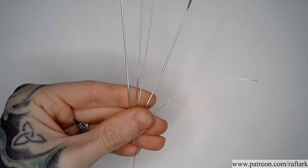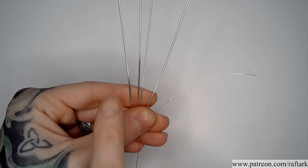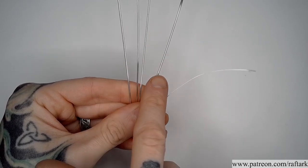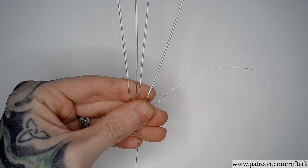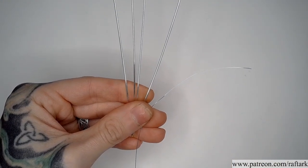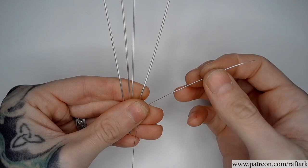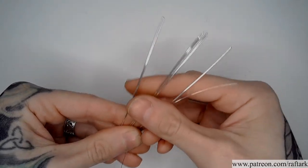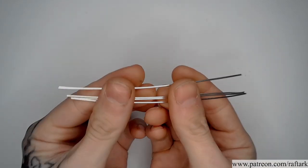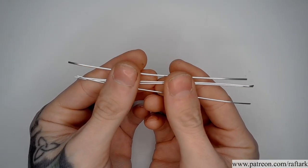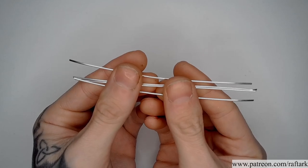The wires that I'll be using to create this setting are two segments of 16 gauge half round, and two segments of 18 gauge half round. For the weaving wire, I have four feet of 28 gauge round. Depending on the length that you'll need for your piece, you may need more wire than I'm using here. Each of my segments is four inches long.